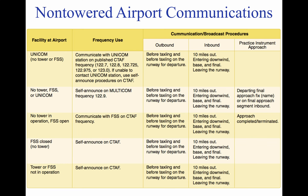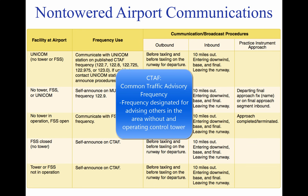A non-towered airport does not have an operating control tower. Two-way radio communications are not required, although it is good operating practice for pilots to transmit their intentions on the specified frequency for the benefit of other traffic in the area. The key to communicating at an airport without an operating control tower is selection of the correct common frequency. The acronym CTAF, which stands for Common Traffic Advisory Frequency, is synonymous with this program. A CTAF is a frequency designated for the purpose of carrying out airport advisory practices while operating to or from an airport without an operating control tower.